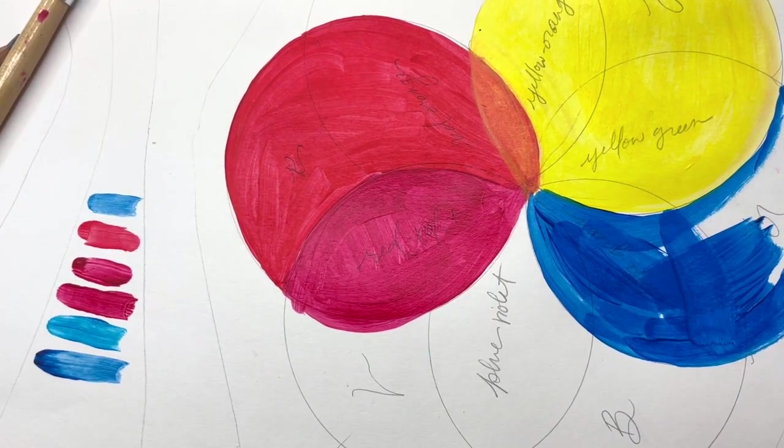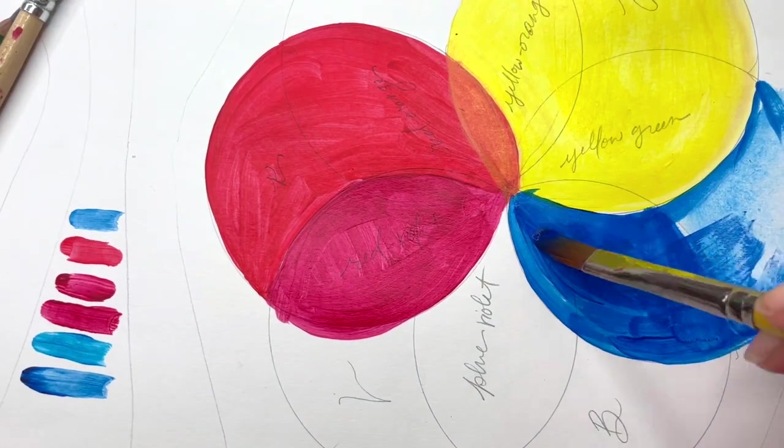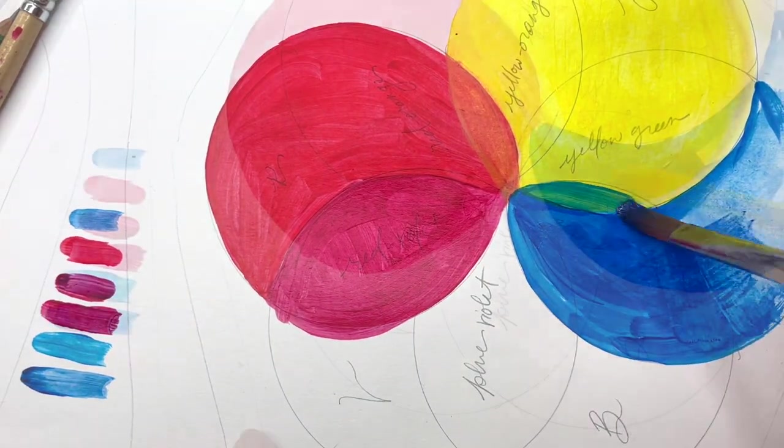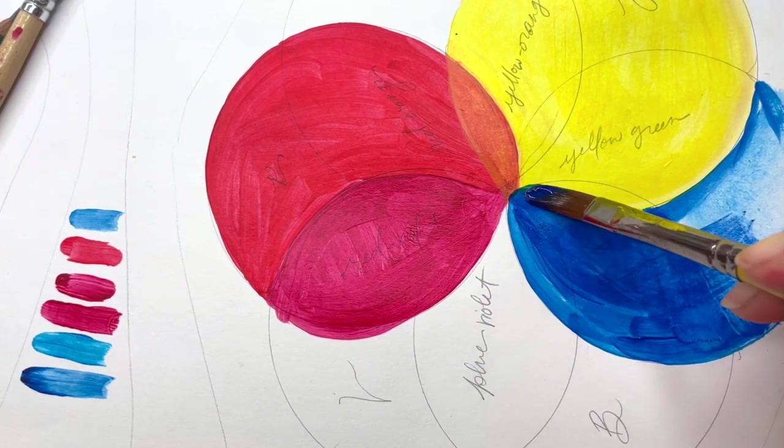We already covered having a bright or true red and a more pink-toned red. Here we're going to talk about blue. There is a more turquoise or green darker-toned blue. I want you to put this blue next to your yellow so that it is easier for you to mix green.